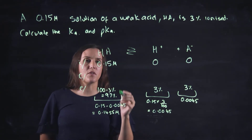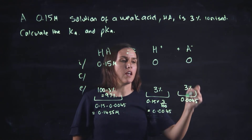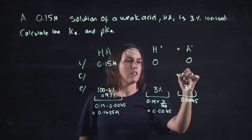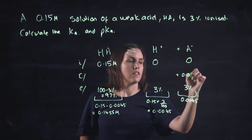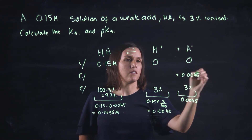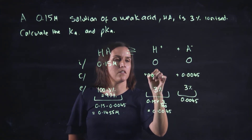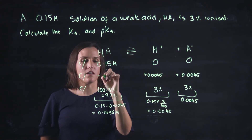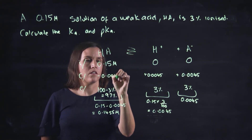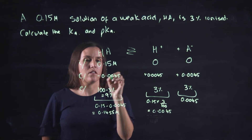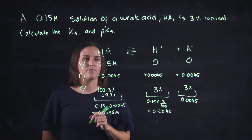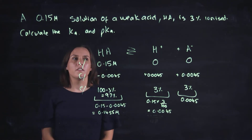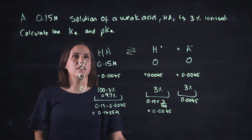The change row shows what's happening between the initial and equilibrium — HA is decreasing while H⁺ and A⁻ are increasing. That's what's happening in the system.